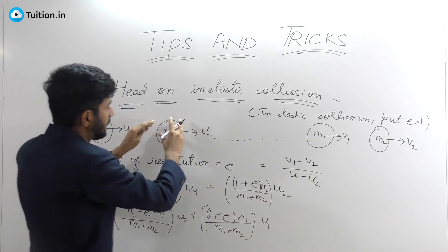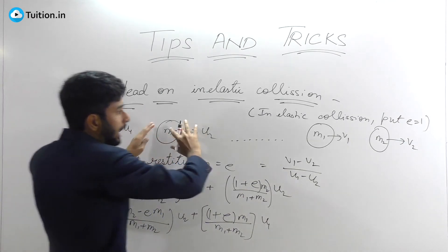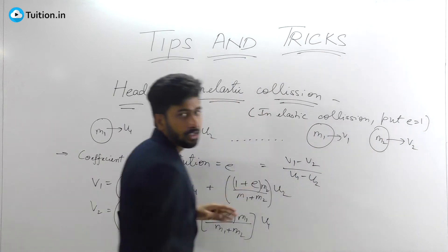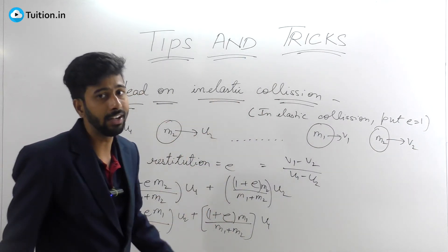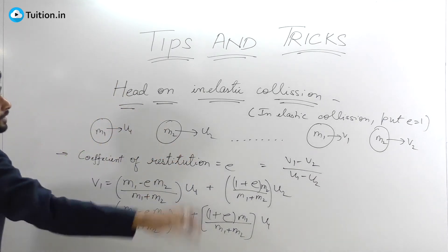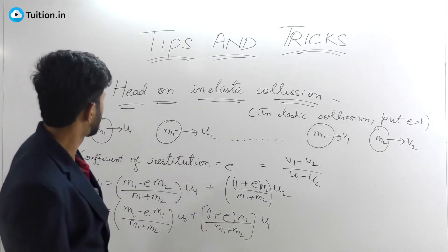They collide and then there is a depression that's formed, and when they separate from each other the depression is still existing. Some of the energy is lost in the form of heat. That is why you can't conserve kinetic energy here—you can just conserve momentum.